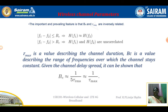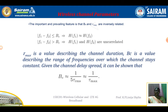When |f1 − f2| > B_C, then H(f1) and H(f2) are uncorrelated. τ_max describes the channel duration, and B_C describes the range of frequencies. The relationship is: B_C ≈ 1/(5·τ_rms), or approximately equal to 1/τ_max.